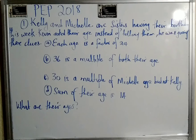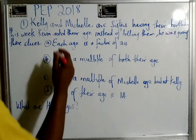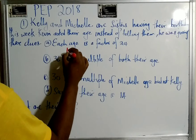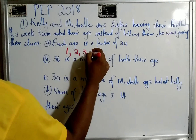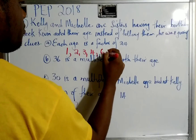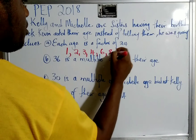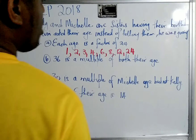So the first thing is that each age is a factor of 24. Don't think about anything else — just think about the factors of 24 first of all. You approach it step by step. List all the factors of 24. Factors are numbers that can go into 24 without a remainder. So: 1, 2, 3, 4, 6, 8, 12, and 24 can go into itself. These are all the factors of 24.